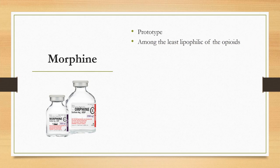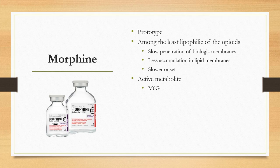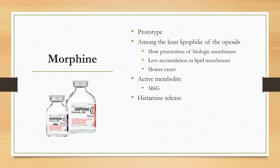Morphine is one of the least lipophilic opioids, meaning it is slow to penetrate biological membranes such as the blood-brain barrier, accumulates less in lipid membranes, and is slower to provide onset of pain relief. Morphine does have active metabolites; the most clinically important is morphine-6-glucuronide (M6G), which can prolong effects and cause excessive sedation in patients with renal failure. M6G is more hydrophilic than morphine, making it harder to cross the blood-brain barrier, but in patients with renal failure who cannot readily excrete it, high concentrations build in the bloodstream and M6G can enter the CNS where it is more potent than morphine.